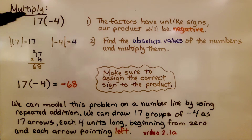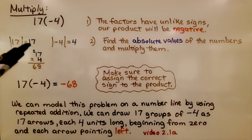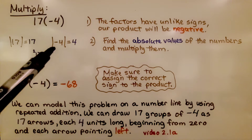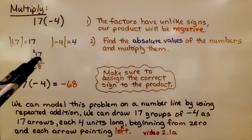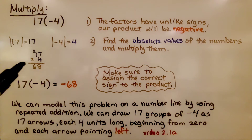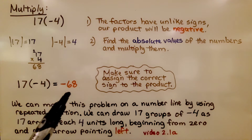We need to multiply positive 17 and negative 4. When the factors have unlike signs, our product will be negative. We find the absolute values of the numbers and multiply them. The absolute value of positive 17 is 17 — it's 17 jumps from zero. The absolute value of negative 4 is 4 — it's 4 jumps from zero. We multiply the absolute values: 17 times 4 is 68. Because of unlike signs, we have negative 68.